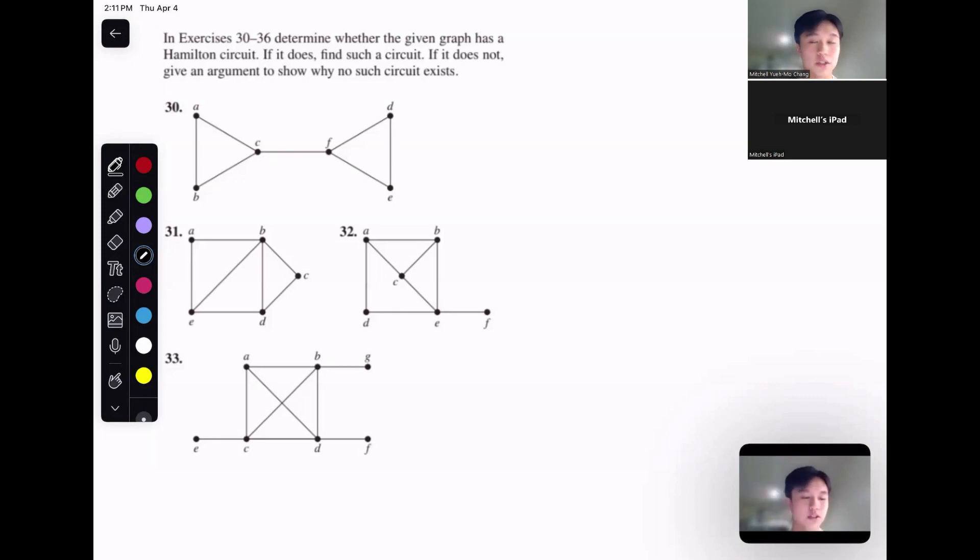Hello everyone, my name is Mitchell, and I'm a GSI for EECS 203. Today we're going to be going over an exercise regarding Hamiltonian circuits from the textbook, anything you can find in Rosen. Let's just hop right into it.